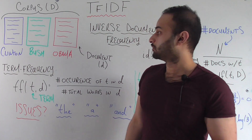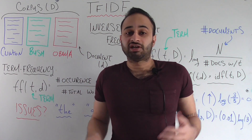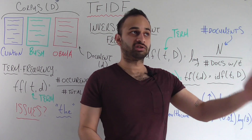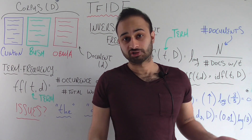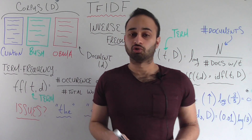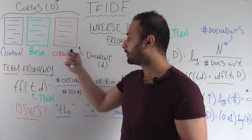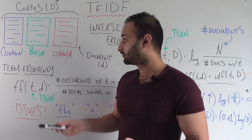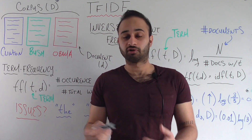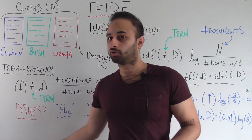For example, let's say we're looking at the Obama speech and we look for the term healthcare. Let's say we have ten occurrences of the word healthcare in the speech, and let's say the number of words in the speech overall is 1,000. If we divide ten over 1,000, we get 1% — so 0.01 is the term frequency of the word healthcare in the Obama speech. It might be different in the other two speeches, and we might have different term frequencies for different terms. This is a pretty intuitive measure of how often a word occurs in any given document.